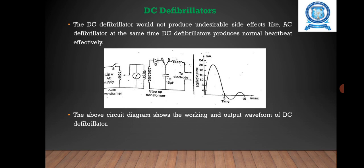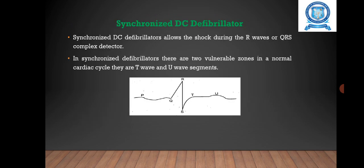The DC defibrillator does not produce undesirable side effects like the AC defibrillator, and it produces a normal heartbeat effectively. A variable autotransformer T1 forms the primary of a high-voltage transformer T2. The output voltage of transformer T2 is rectified by a diode rectifier and connected to a vacuum-type high-voltage changeover switch. During delivery of shock, a push button switch mounted on the handle of the electrode is operated.